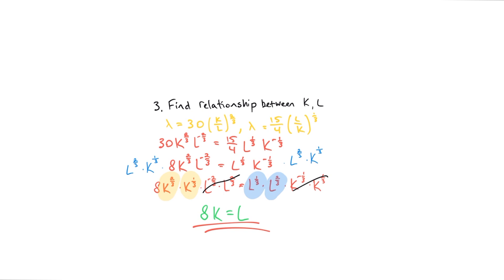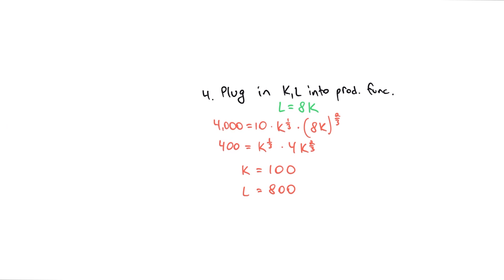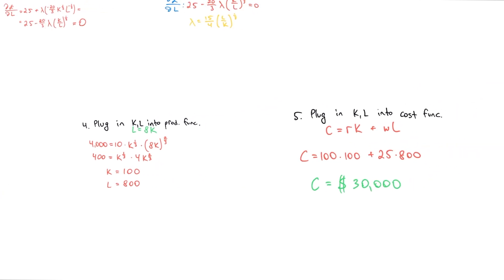Now for the fourth step, we have to plug it into our production function to figure out the exact values. Like before, we have 4,000 equals 10 times K to the one-third times L to the two-thirds. But now for L we substitute 8K, which we do right here. When we write it out, we get that K equals 100. From what we know from before, L equals 8 times K, so L is equal to 8 times 100, or 800.